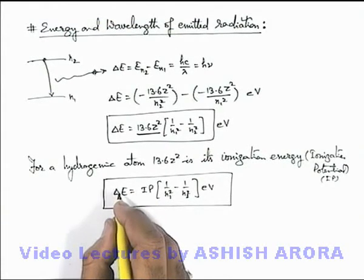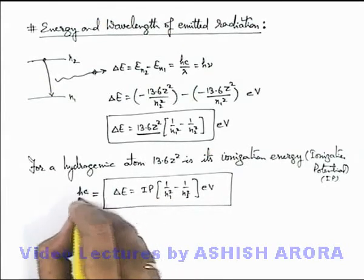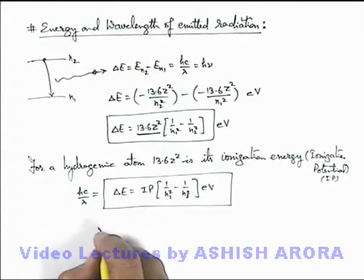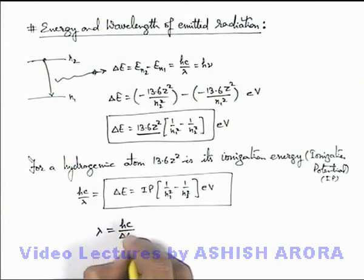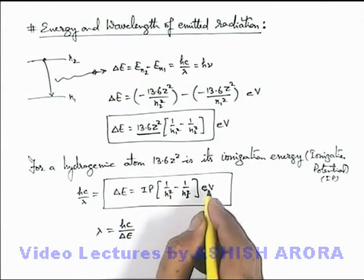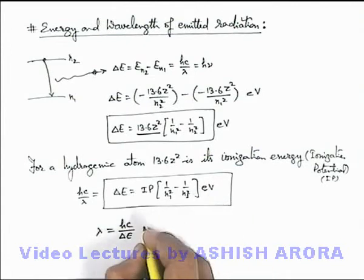And if we wish to calculate the wavelength of emitted radiation, the same can be equated to hc by lambda. And the wavelength lambda here we are getting is hc over delta E. If we are having the value of delta E in electron volt, then in this situation, hc and the conversion factor of this electron volt is 1.6 into 10 to power minus 19 that we can use.